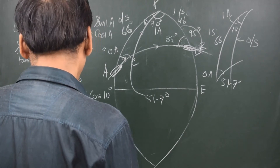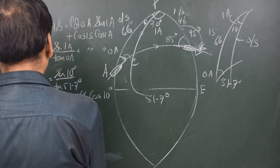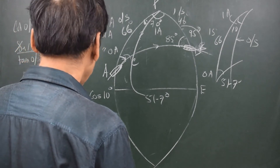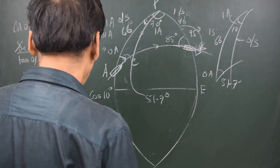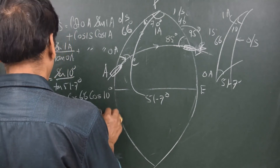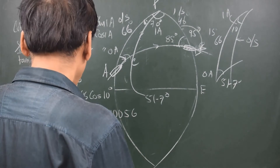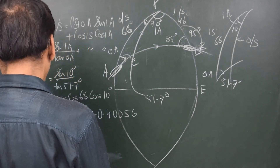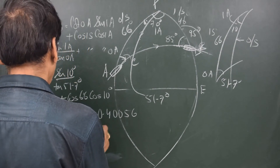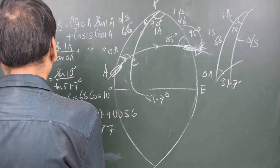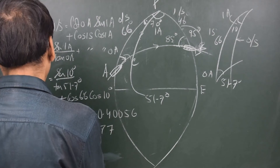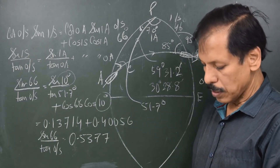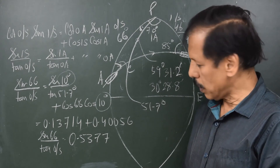The first term gives 0.13714, plus cos 66 degrees times cos 10 degrees equals 0.40056. Adding: 0.13714 plus 0.40056 gives the right-hand side as 0.5377. That equals sin 66 divided by tan of the outer side, so tan outer side equals sin 66 divided by 0.5377.